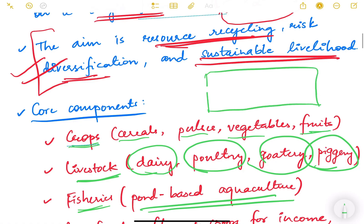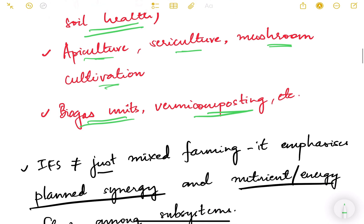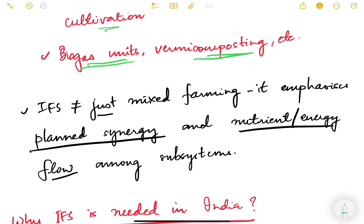You can imagine this is a patch of land of a farmer. Maybe there is one farm pond here with fishes. There is a poultry farm here, and there is a crop farm here. The droppings of the poultry are used as feed for the fishes. The water available here can be used for agriculture. The residue of the farm can be used as fodder for animals. There can be agroforestry with trees for income and protection.